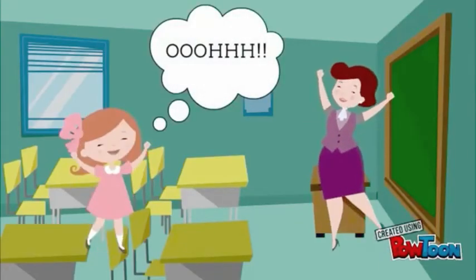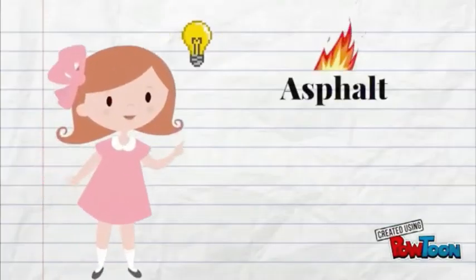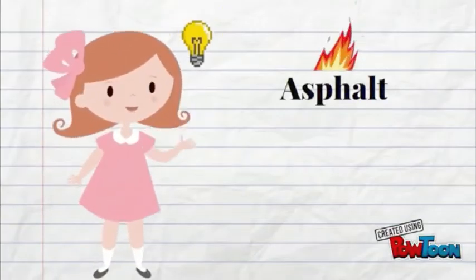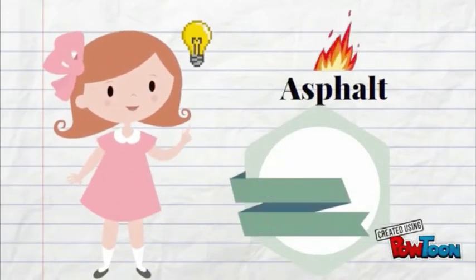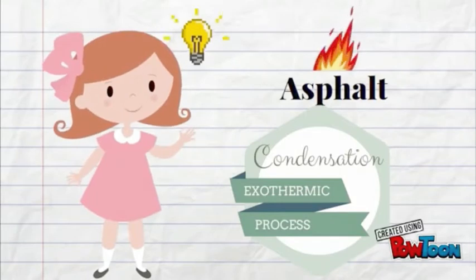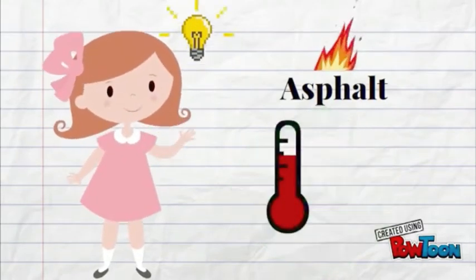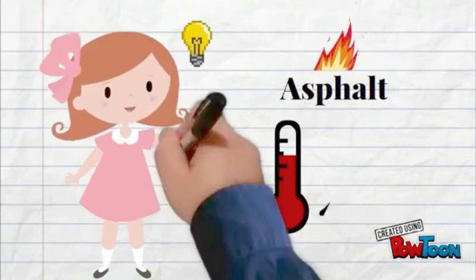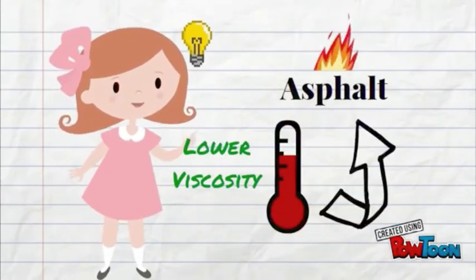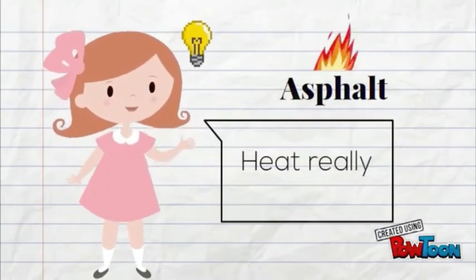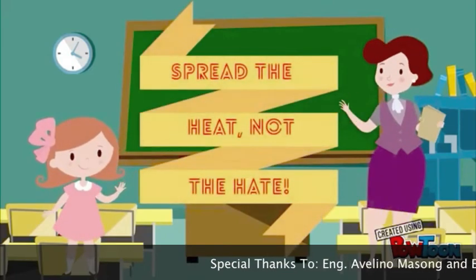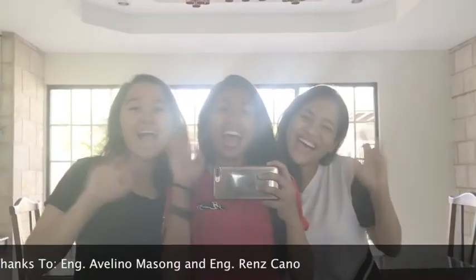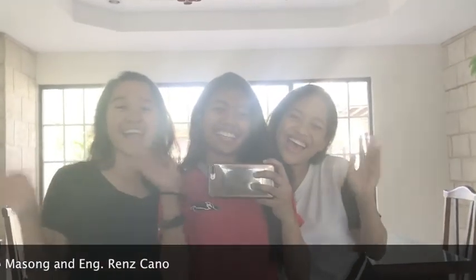So the asphalt undergoes both an endothermic process through distillation and an exothermic process through condensation. The asphalt is easier to mold when it has a higher temperature because of the lower viscosity. Heat really does a lot! And remember guys, spread the heat, not the hate! Bye!